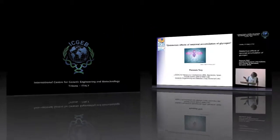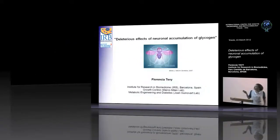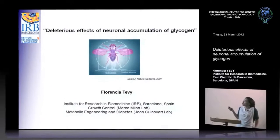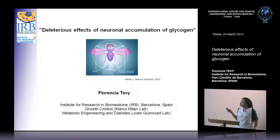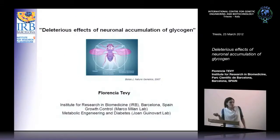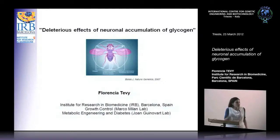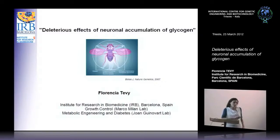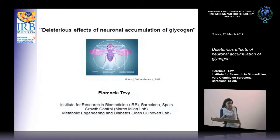The title of my talk is 'Deleterious Effect of Neuron Accumulation of Glycogen.' This is a paper which just published, and it's a collaboration with people doing mice. The paper covers both flies and mice, but I'm only going to present the parts on flies.